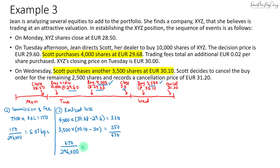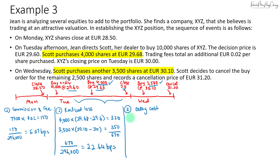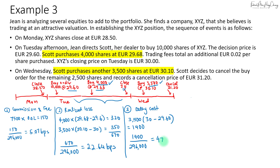Moving on to the delay cost, this only applies to the 3,500 shares bought on Wednesday — there is no delay for the 4,000 shares since those were bought on the same day the order was placed. For the 3,500 shares, the delay runs from when the order was placed at a decision price of 29.60 to the Tuesday close of 30. So the delay cost is (30 minus 29.60) times 3,500 equals 1,400 euros, which divided by 296,000 equals 47.3 basis points.